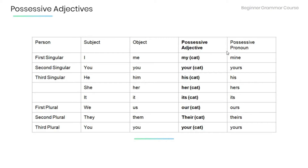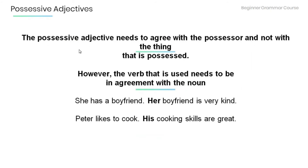First person plural: subject 'we,' object 'us,' possessive adjective 'our' as in 'our cat,' possessive pronoun 'ours.' Second person plural: subject and object 'you,' possessive adjective 'your,' possessive pronoun 'yours.' Third person plural: subject 'they,' object 'them,' possessive adjective 'their' as in 'their cat,' possessive pronoun 'theirs.' Note that possessive adjectives need to agree with the possessor, not with the thing that is possessed.